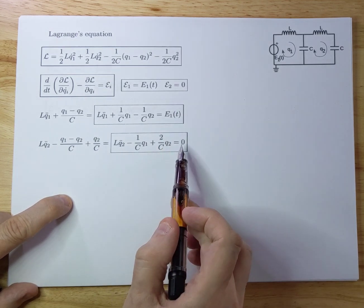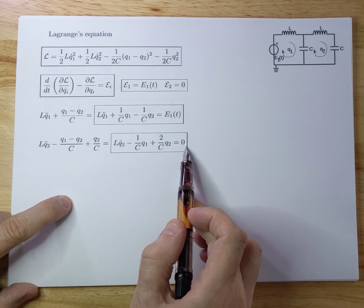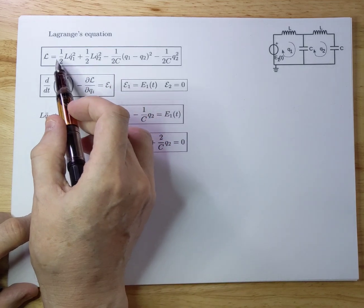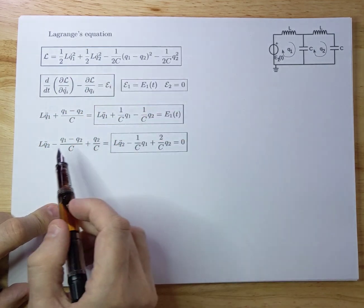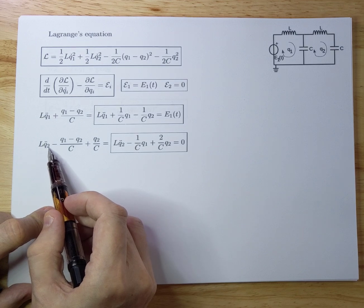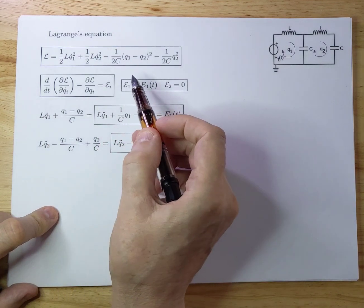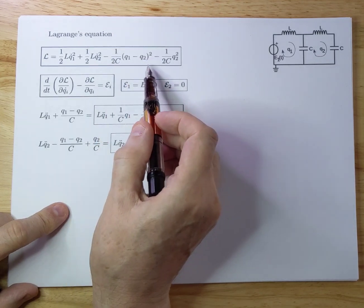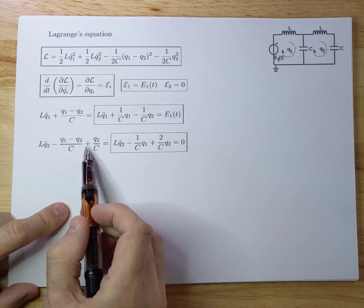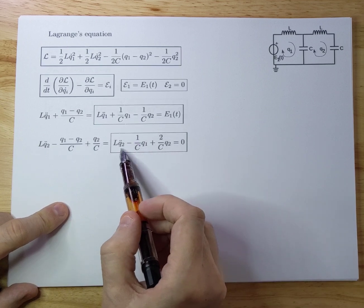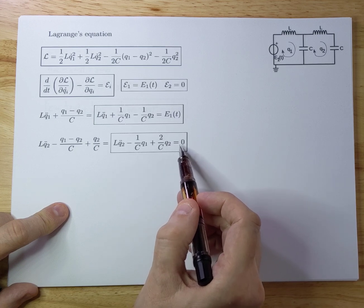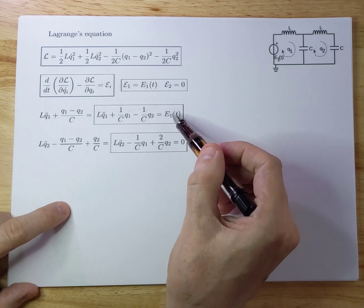That's over here. For the second one you will have a zero here. Because E2 equals zero. So you get a zero here. Second generalized parameter gives the same. It's the same idea. You start differentiating the Lagrangian with respect to Q2 dot. That gives you LQ2 dot. And then you have to differentiate it with respect to time. So you get an LQ2 double dot. Same now for differentiation with respect to Q2, the Lagrangian. And you get minus Q1 minus Q2 minus Q1 minus Q2 over C plus Q2 over C. And I rewrote that a little bit into LQ2 double dot minus 1 over CQ1 plus 2 over CQ2 equals zero. So these are the two equations of motion that we can solve.